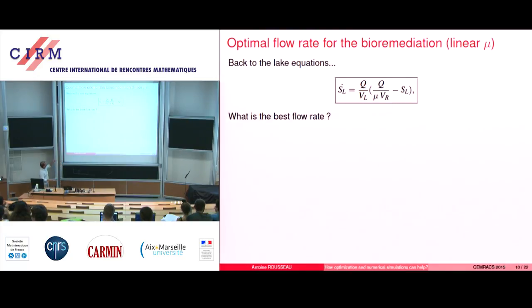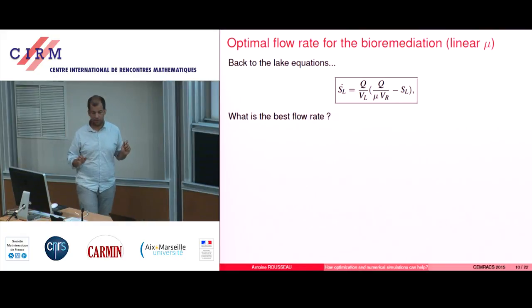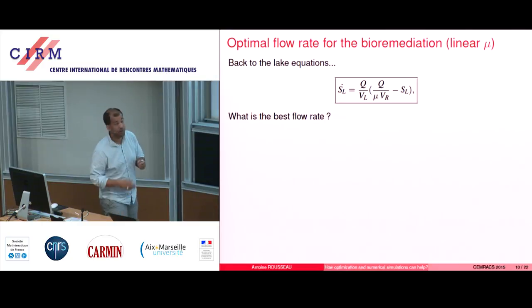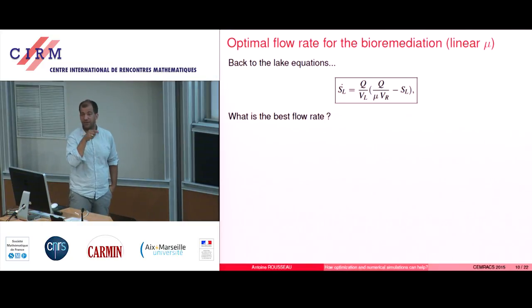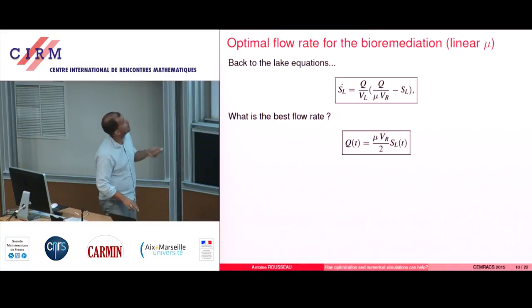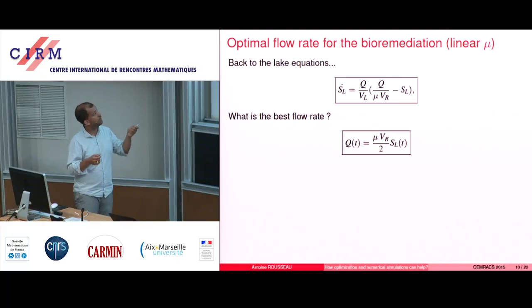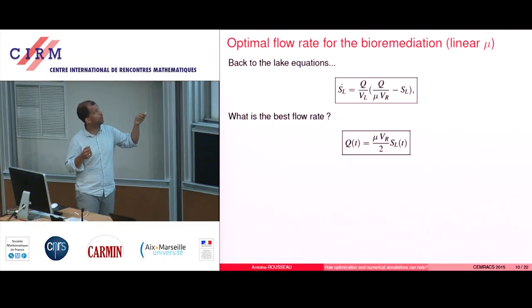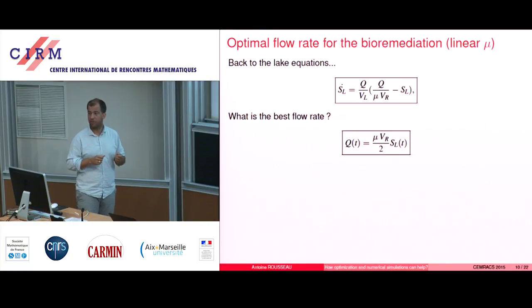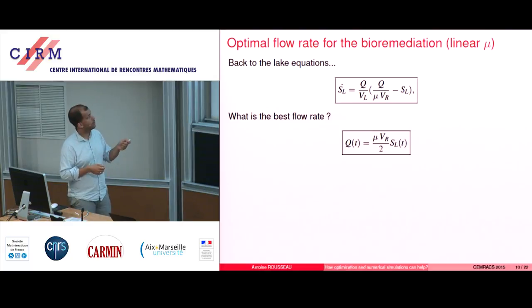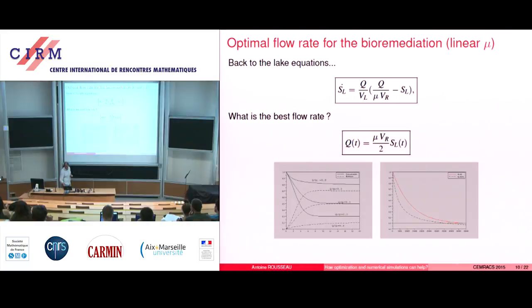And I put it back in the lake system, and now I just consider this system. What is the best flow rate? What I want to do is decrease SL as fast as possible. So I want to play on Q to have this decrease as fast as possible. And of course, you can check that this value of Q is the best one — you can provide a value of Q which takes into account the evolution of SL. At the beginning SL is strong, so you have a flow rate which is large, and as time goes by, you just diminish a little bit the power of the pump, because this gives you the best technique.